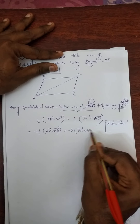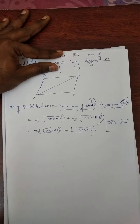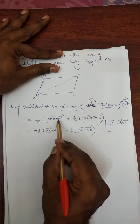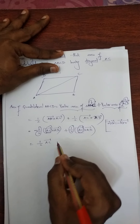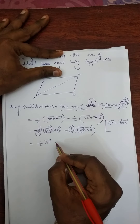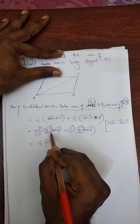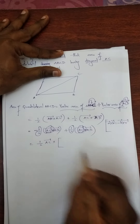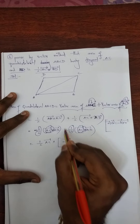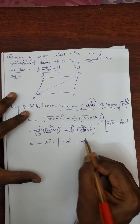See here, 1/2, AC vector cross AD vector. AC vector is common, so I only need to take AC vector common. 1/2 is common, AC vector put outside. After taking AC vector outside — here also cross, here also cross — take cross outside too. So what is remaining: minus AB vector, plus AD vector.